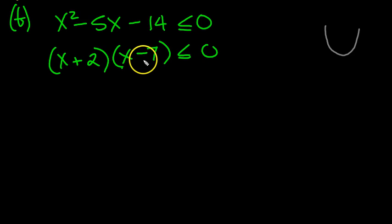So we have two roots: one at 7 and one at -2. And we know it's a u-shaped curve, so let's carry on doing a little sketch of it.